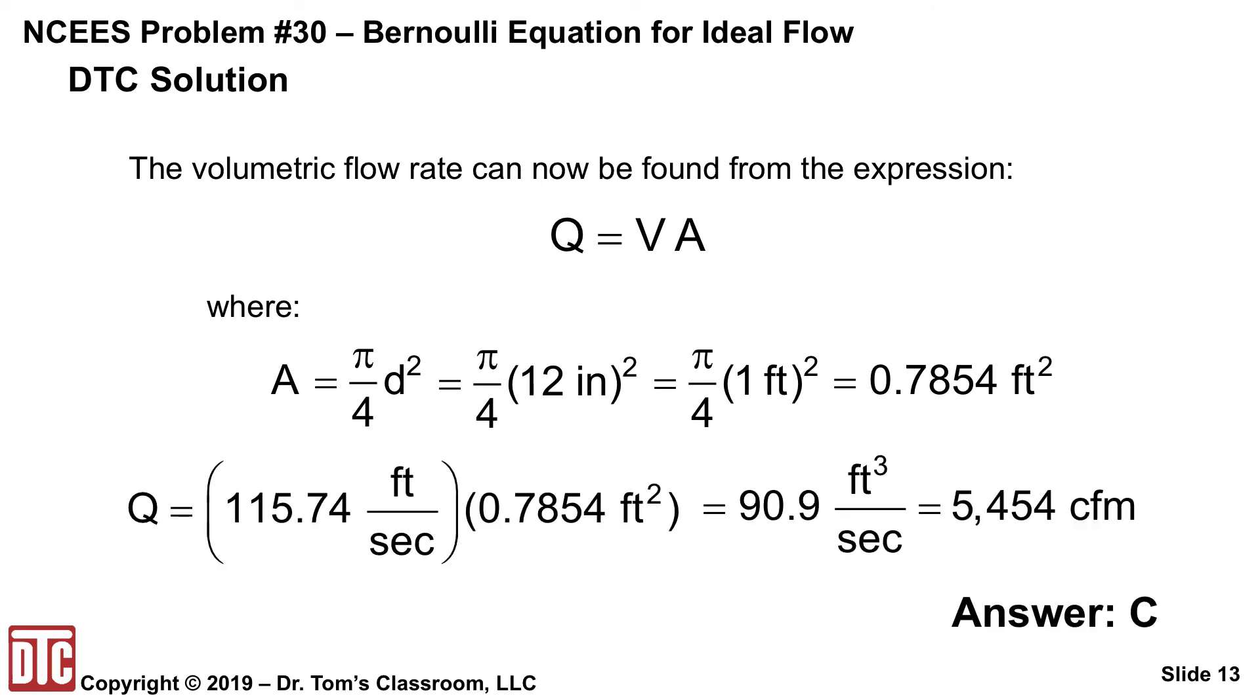If we take the 115.74, the velocity, times this area, we get 90.9 cubic feet per second, which is typically what we like. But here are the answers, they want it in cubic feet per minute. So multiply by 60 seconds and get 54.54, which is close and very close to answer C and you are done.